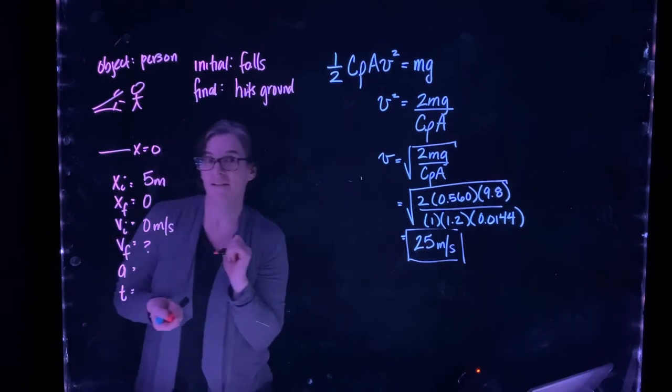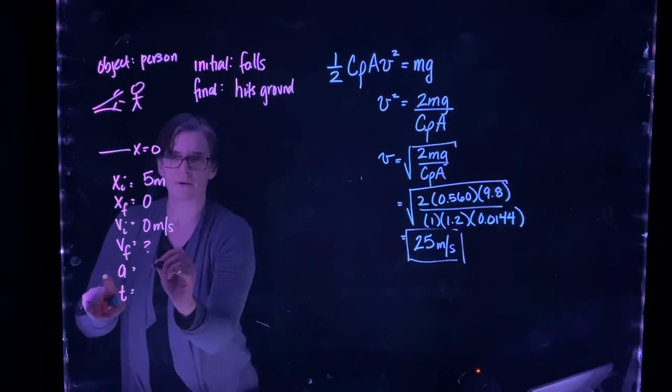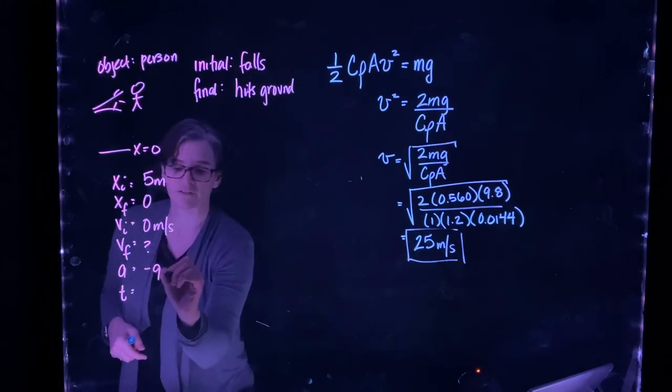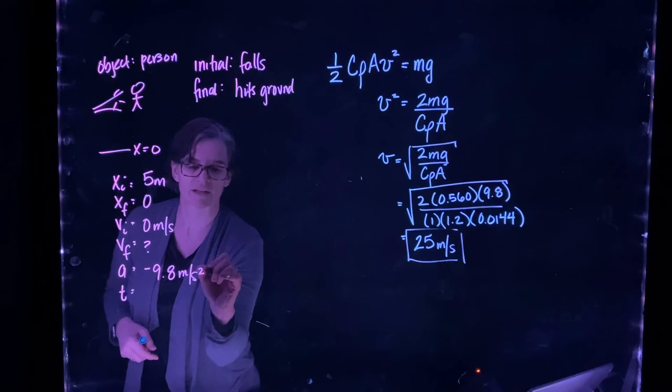He's falling off that branch, so his initial velocity is zero meters per second. We don't know how fast he's going when he hits the ground. The acceleration, if we're ignoring the drag coefficient, is free fall, so 9.8 meters per second squared.